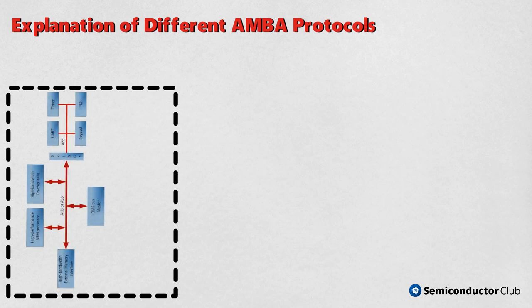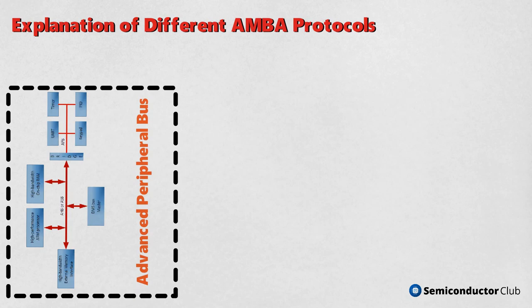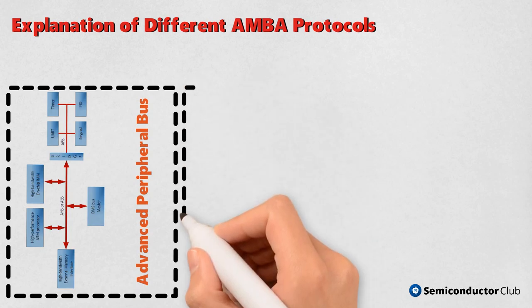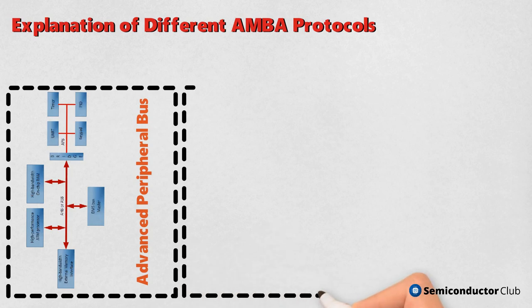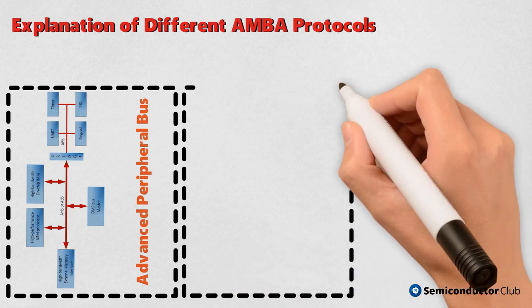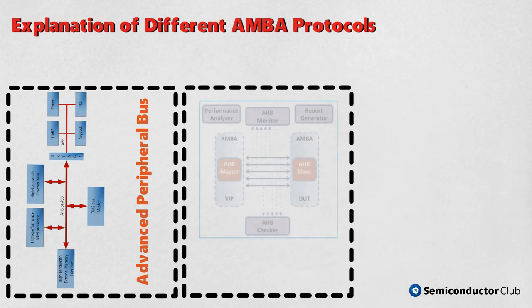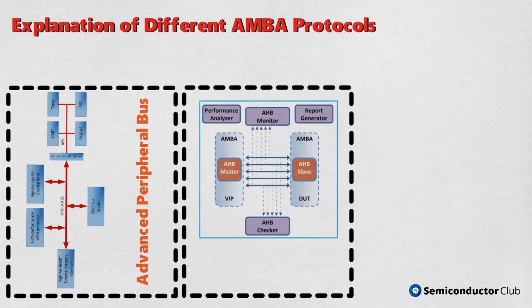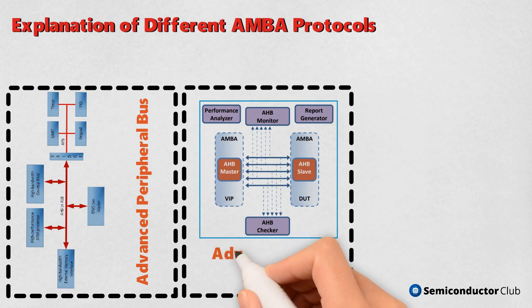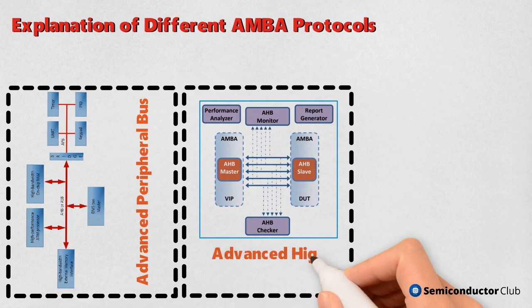AHB is generally a high-performance bus which can provide better bandwidth operation. Through AHB, a design can achieve features like split transactions, better data bus configuration, burst transfer, and single-clock edge operation. AHB is used on ARM-7, ARM Cortex-M, and ARM-9-based designs. An AHB system design contains AHB Master, AHB Slave, AHB Decoder, and AHB Arbiter.